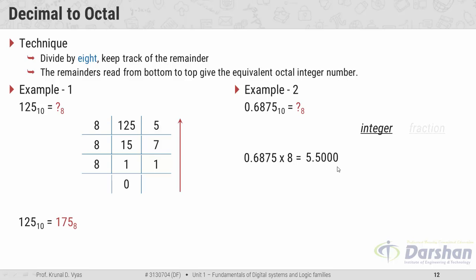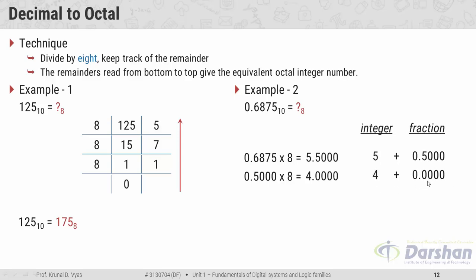Splitting 5.5 into integer and fraction gives 5 as the integer and 0.5 as the fraction. Repeating this process until the fraction part becomes 0, we read the integer parts from top to bottom and place 0-point in front. So 0.6875 in decimal is equivalent to 0.54 in octal.